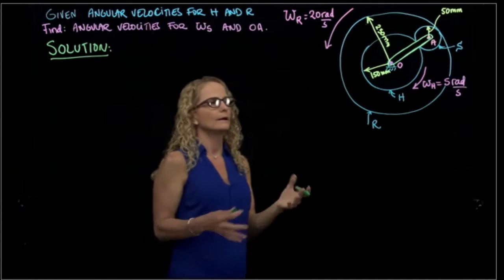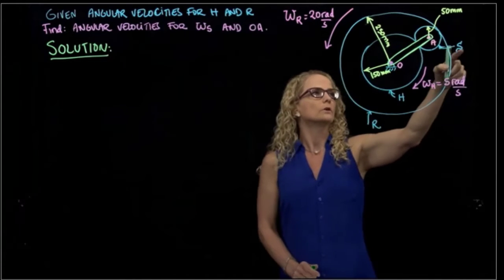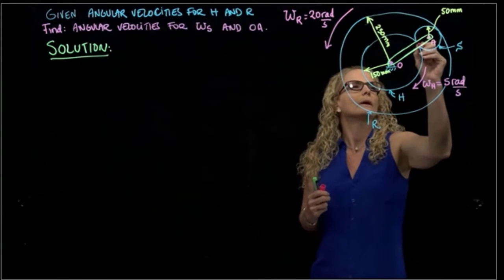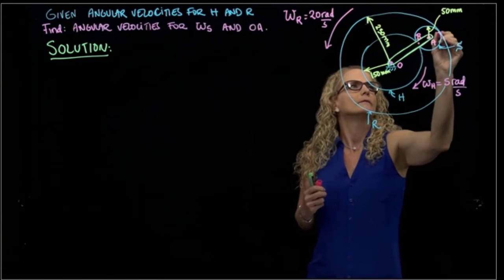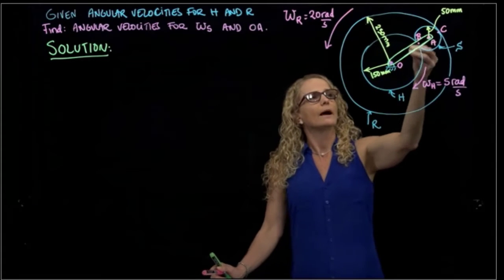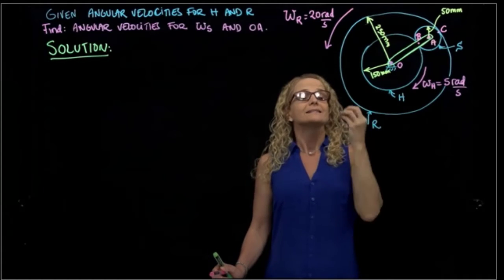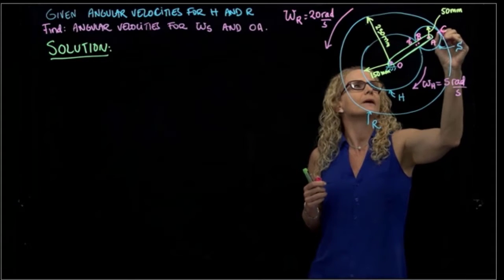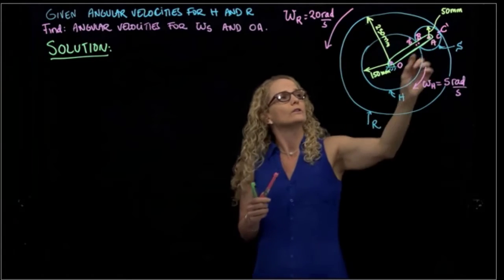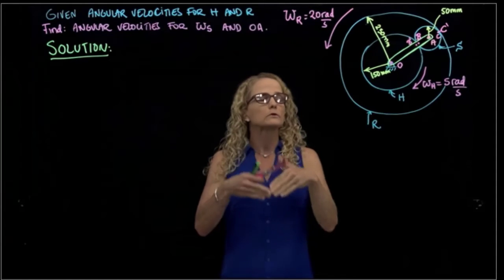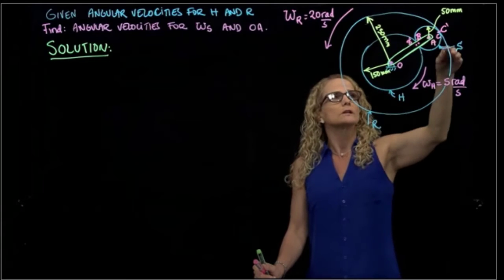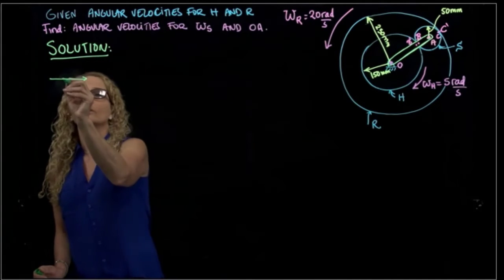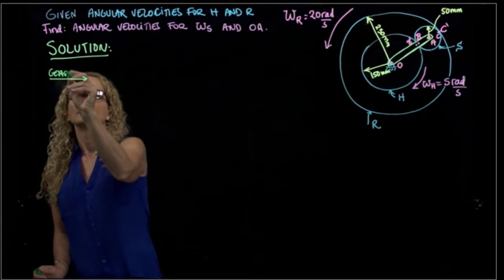We need to use the given data. Since we want to find the angular velocity of gear S, I will name two unlabeled points: this one B and this one C. I will find the velocities of B and C using the angular velocities of the other gears, since we have rotation without slipping between points B and B-prime, and between C and C-prime. Those connecting points move together.